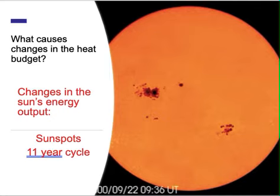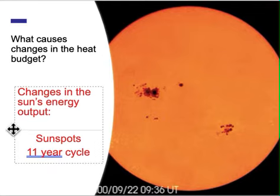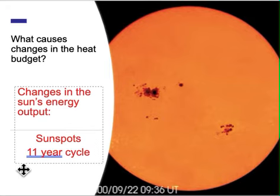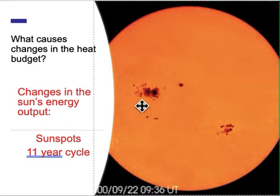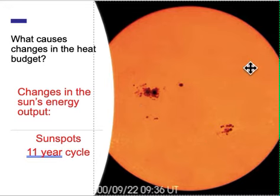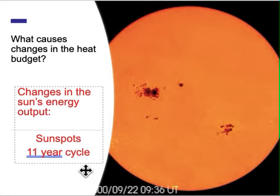What are some natural things that can upset the heat budget? One is energy output from the sun. The sun has an 11-year cycle of sunspots — these dark areas on the sun. When we have a lot of sunspot activity, we actually get a little bit more heat coming from the sun, and this happens on an 11-year cycle.